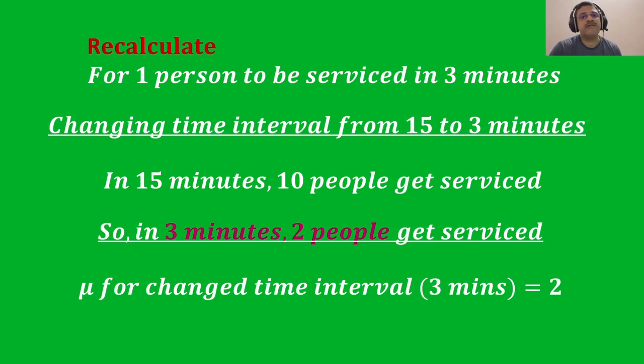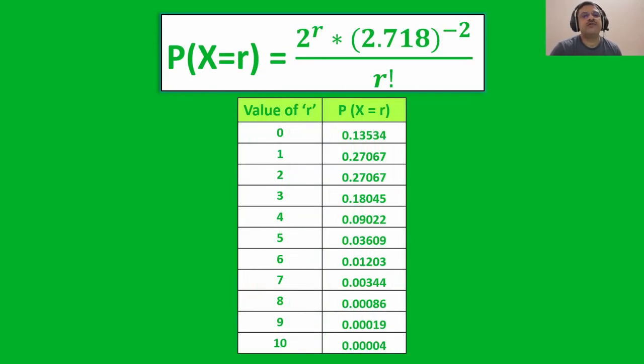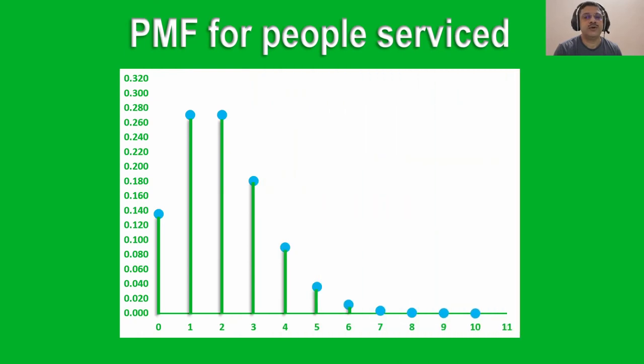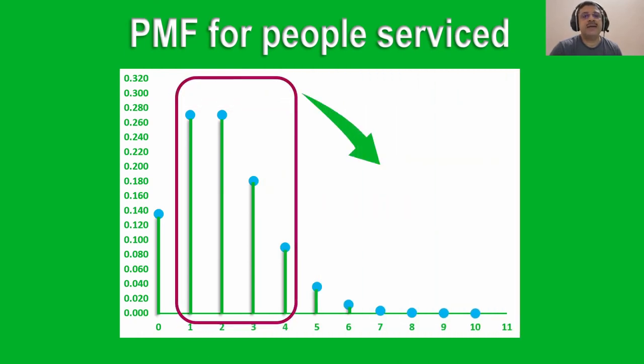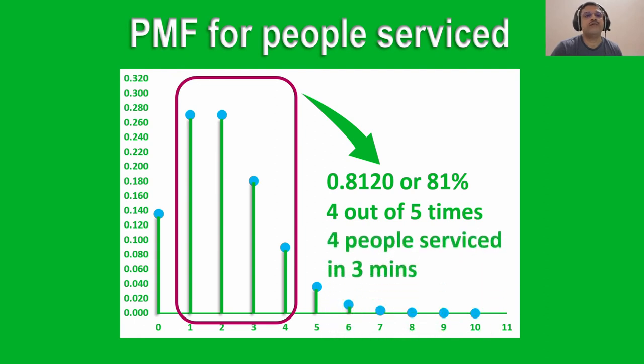Now using this new average, let us calculate the probability distribution for the various number of people being serviced in 3 minutes. The probability distribution for up to 10 people being serviced in 3 minutes is as shown, and the PMF plot for this is as shown. Using this data, if we add up for the first 4 people, we see that 80% of the time — or 4 out of 5 times — 4 customers will get serviced in 3 minutes. That gives us a better perspective of the servicing efficiency.